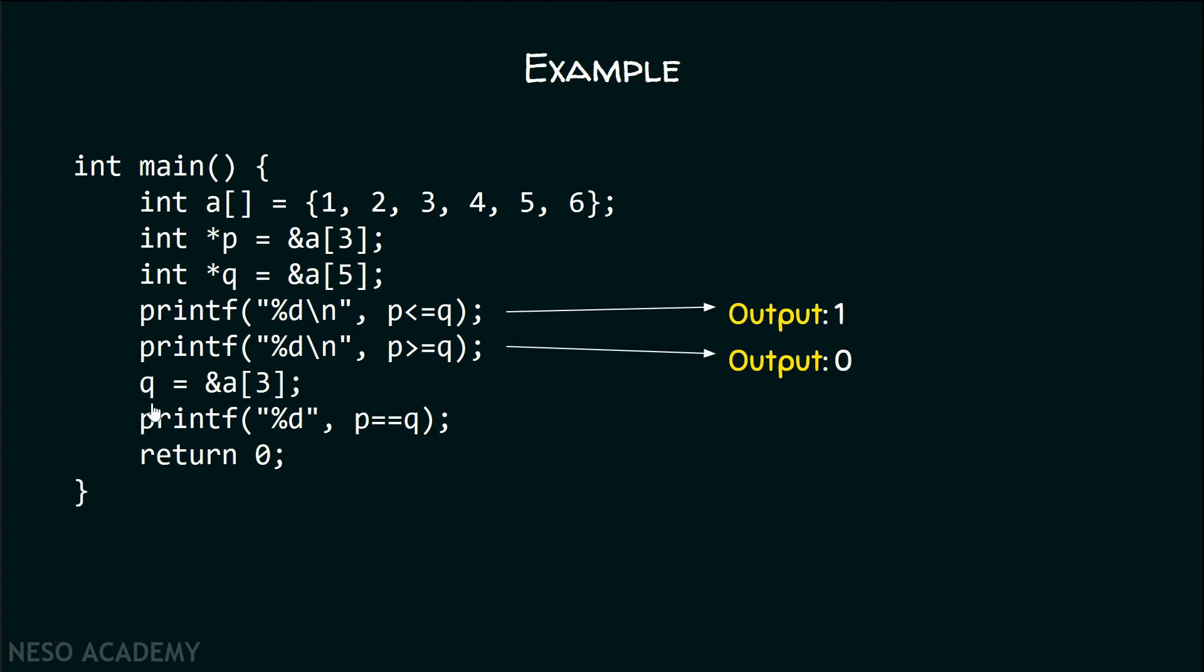With this statement, I can change the address of Q to the address of A[3]. That is, I will assign the address of this element to pointer Q. Therefore, pointer P and pointer Q are pointing to the same location.